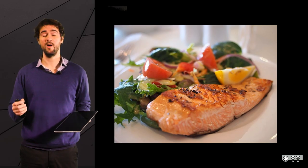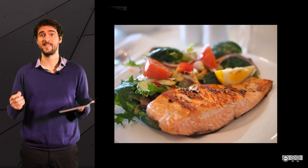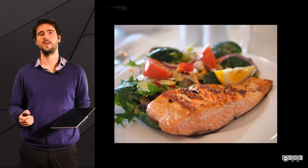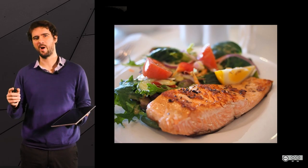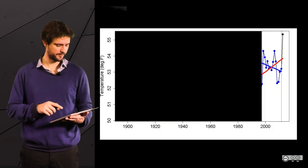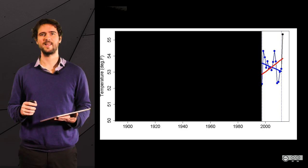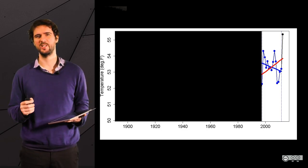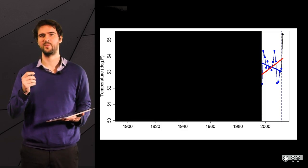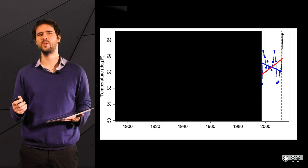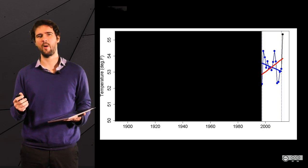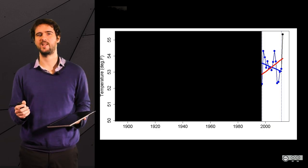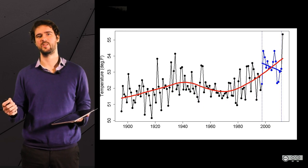And moreover, they have the audacity to use data to support the claim. They usually come up with this graph that shows the recent decline in average yearly temperature in recent years. What they usually do not show, however, is the rest of the graph that shows a clear trend over the century.